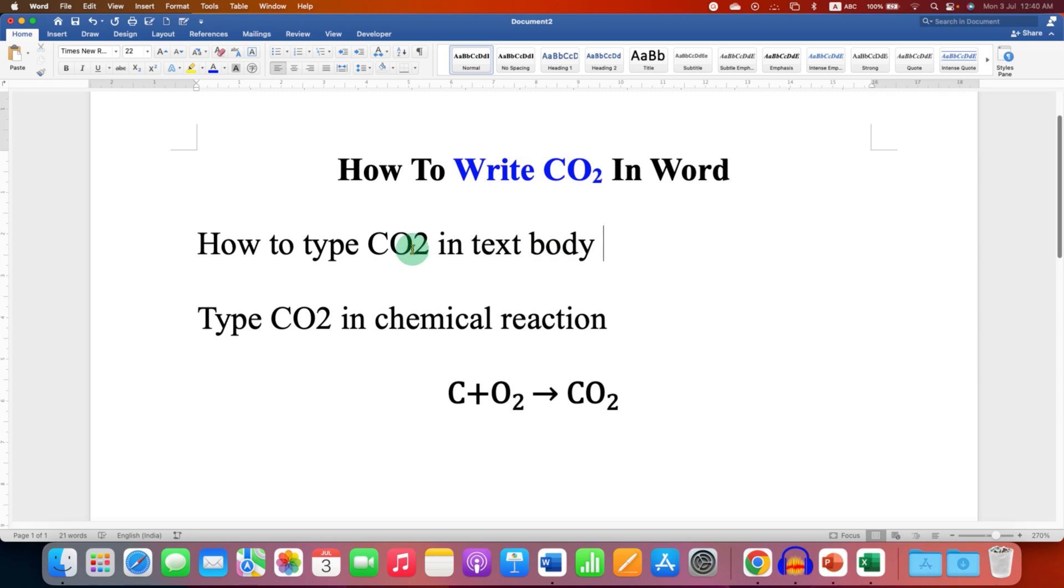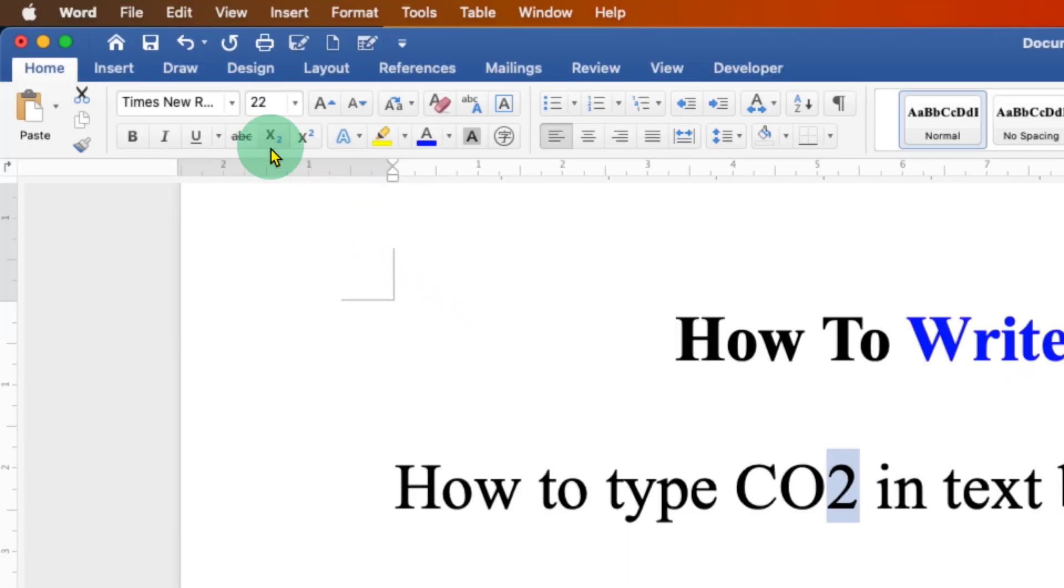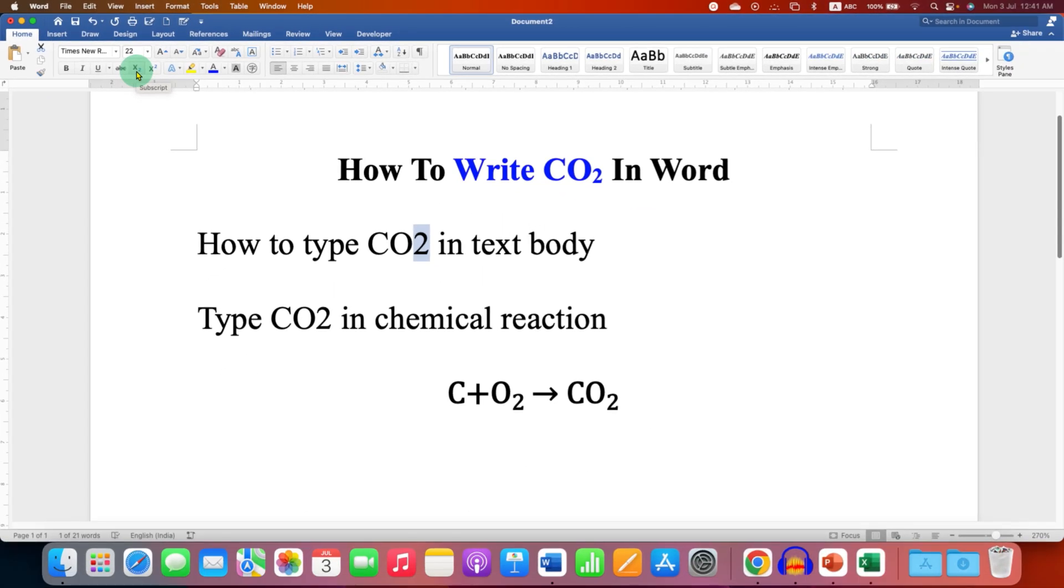In the first method, if you are writing a text, you just have to type CO2, then select the number 2. Here you will see X at the bottom 2, this is a subscript option. After clicking on this option you will get the small 2 for CO2.